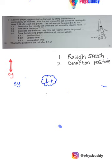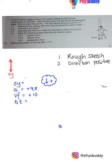Remember we're taking down as positive and we stick to that throughout the question. It's perfectly fine to take up as positive, but unless the question specifies a direction you have a choice. So: we're looking for delta y; acceleration is positive 9.8 (down positive); final velocity when it hits the ground is positive 10; and the time to hit the ground is 1.84 seconds.